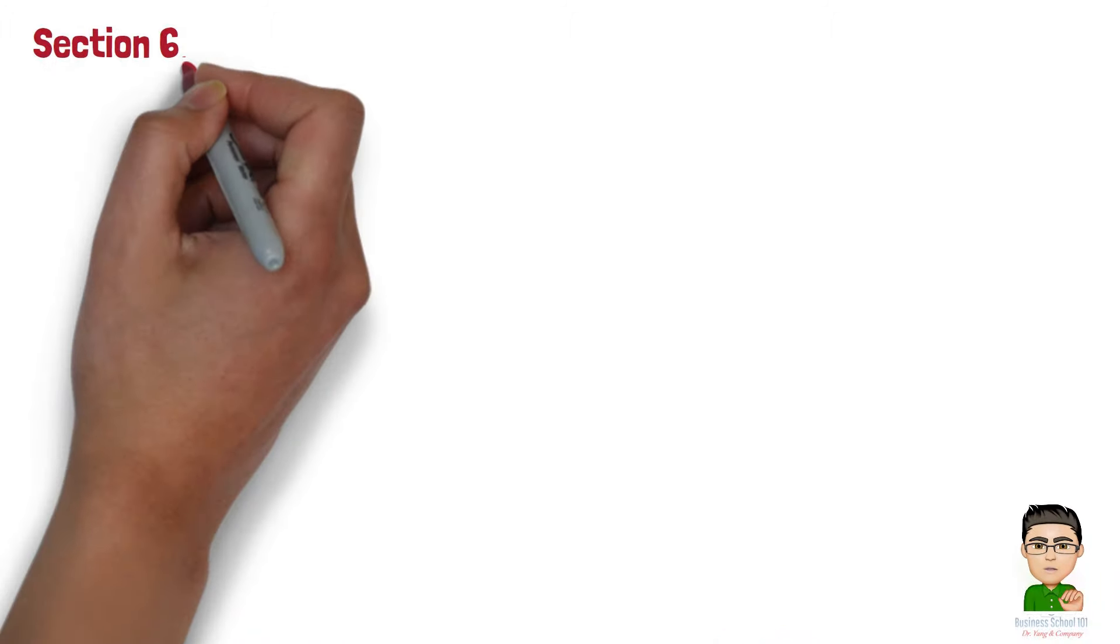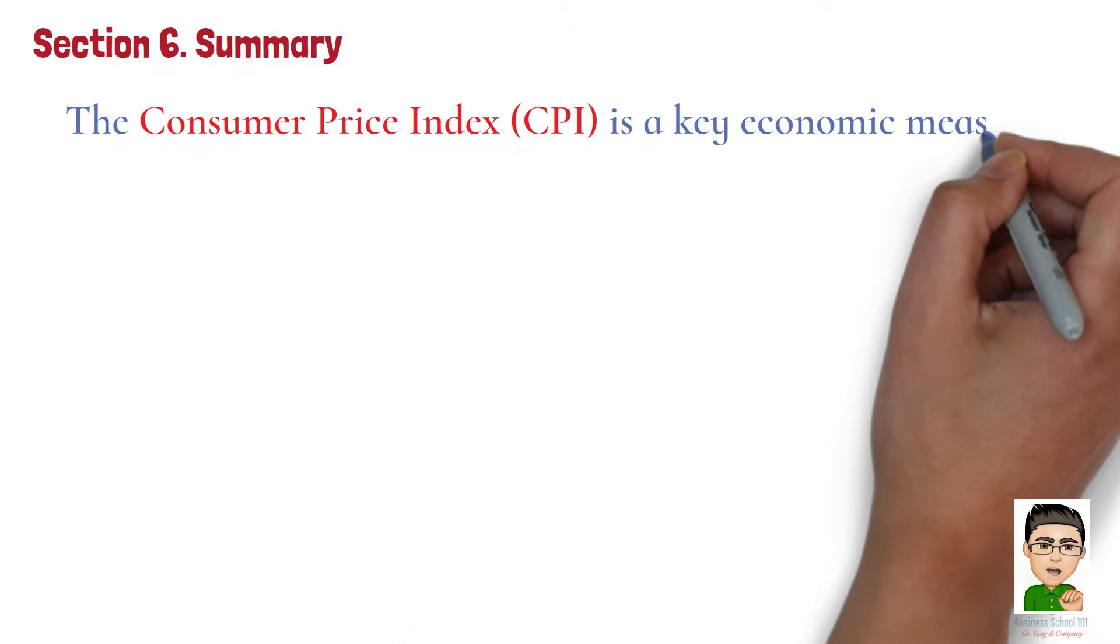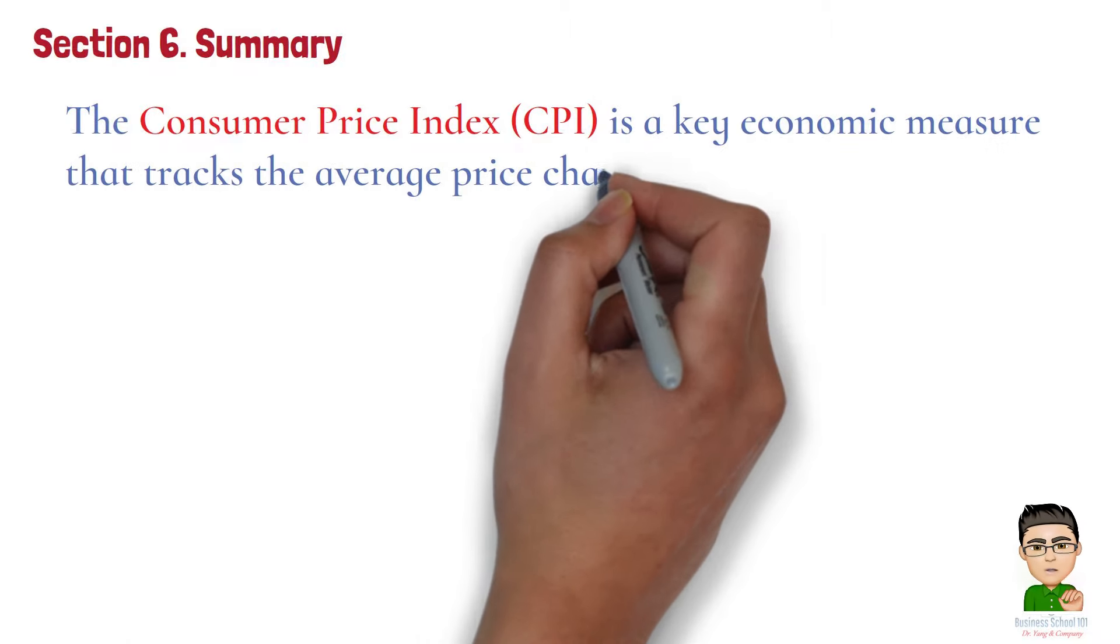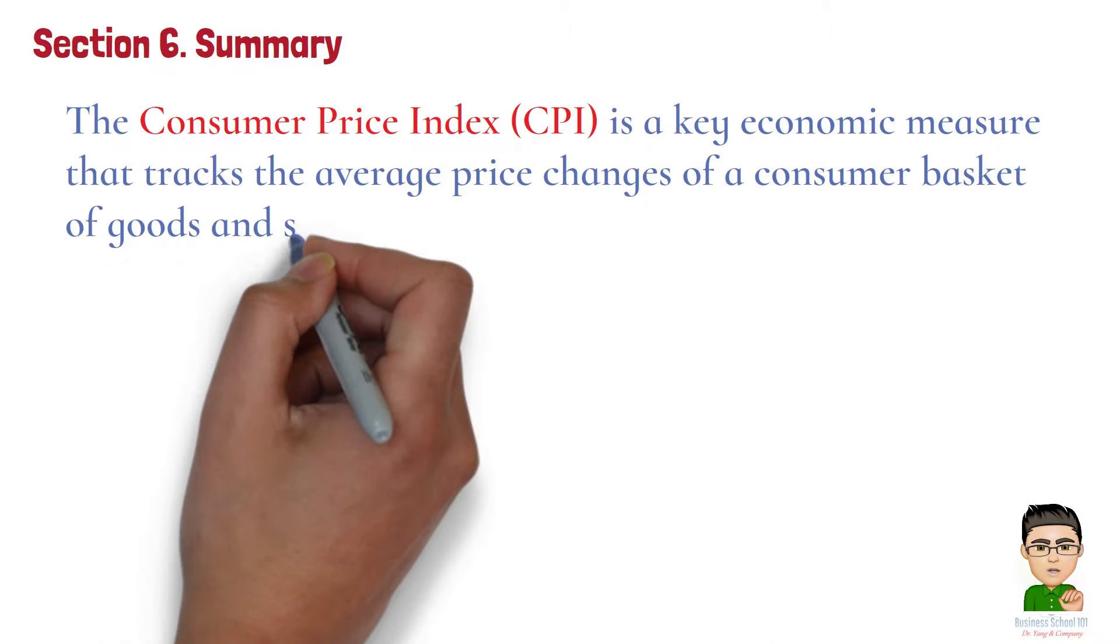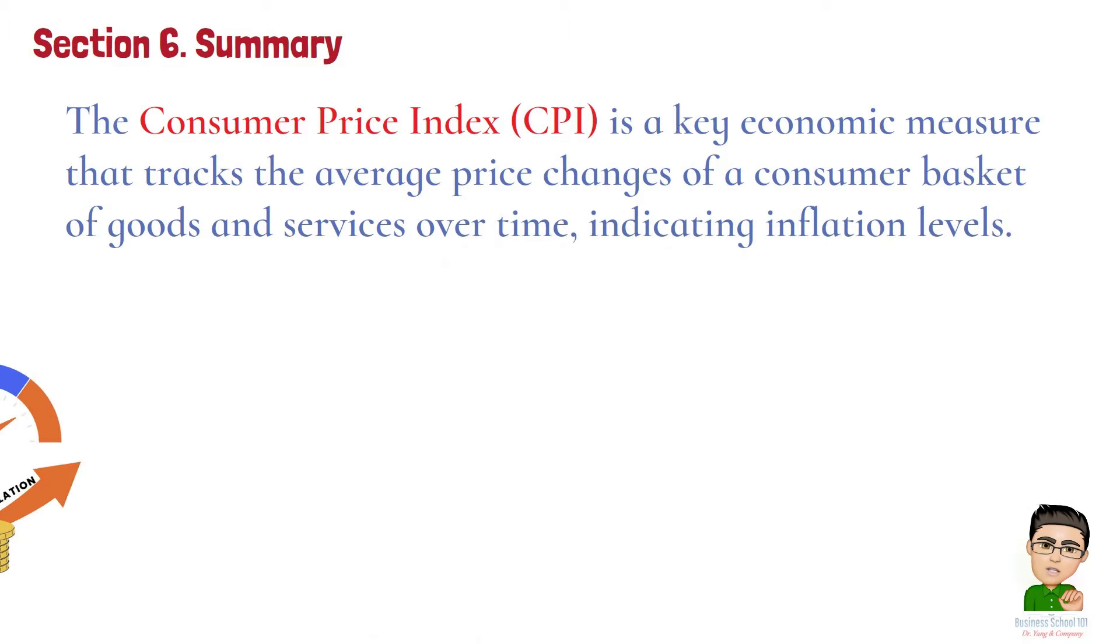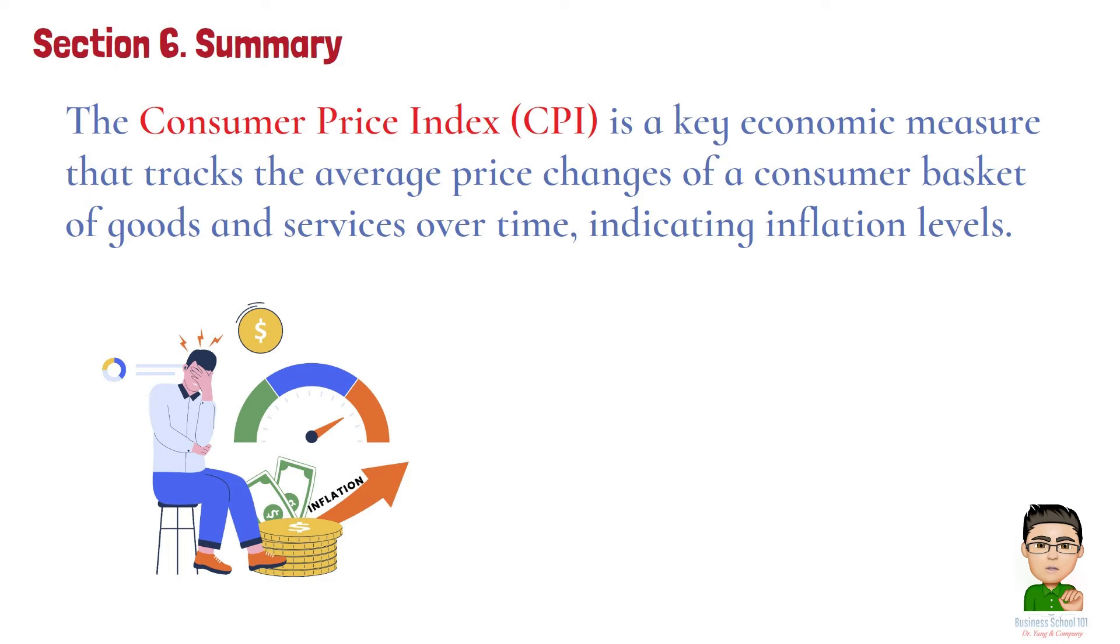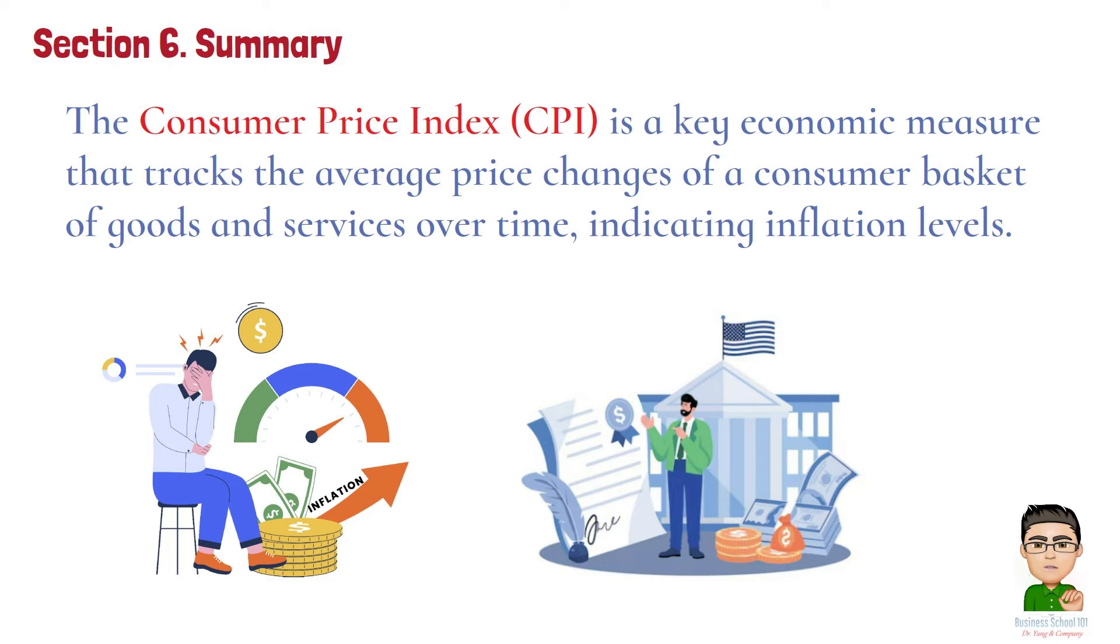Section 6. Summary. To sum up, the Consumer Price Index, CPI, is a key economic measure that tracks the average price changes of a consumer basket of goods and services over time, indicating inflation levels. In the business world, it's crucial for guiding monetary policy, wage adjustments, and strategic planning, making it a critical tool for economic forecasting and business decision-making.